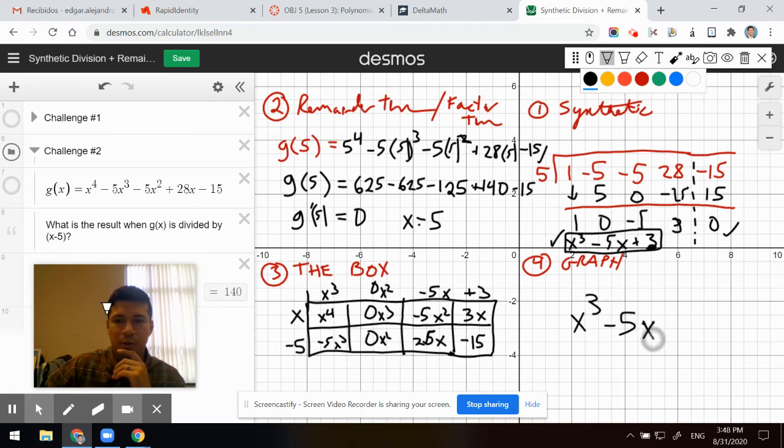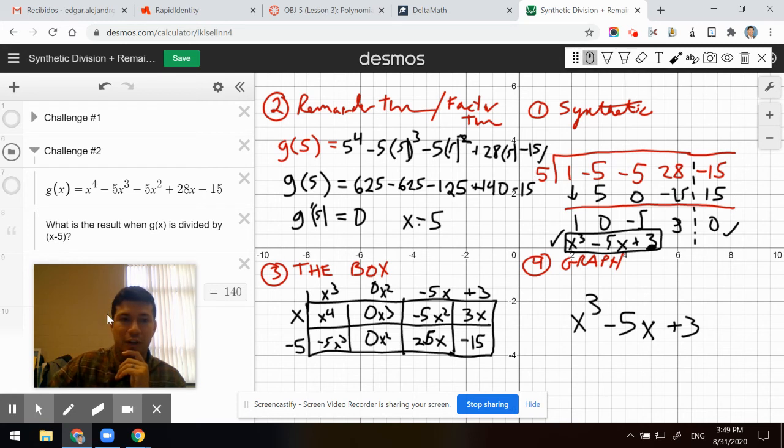The lag is real. 5x plus 3, that cubic polynomial contains the other potential zeros. Because it's a cubic, it could contain three other complex zeros. And as it turns out, it actually does.